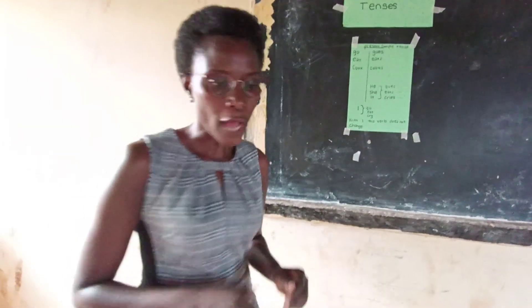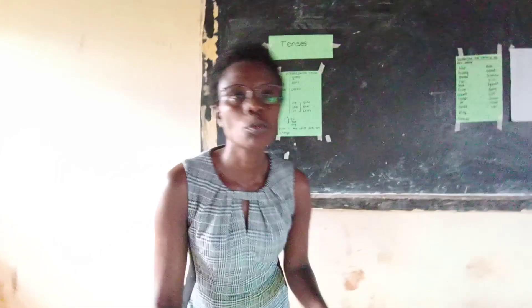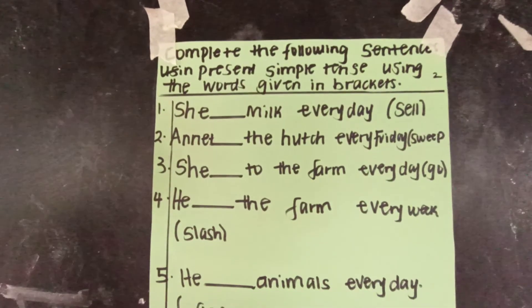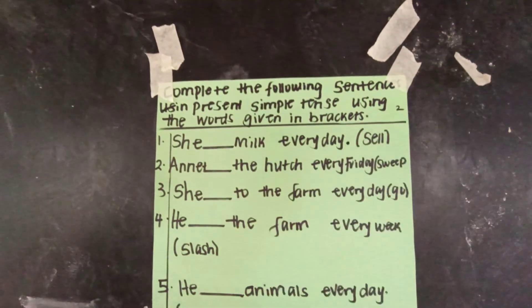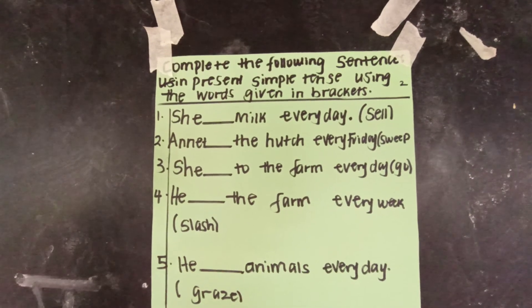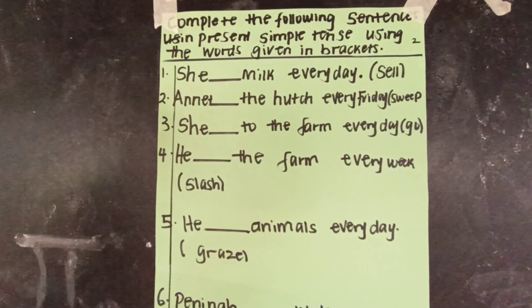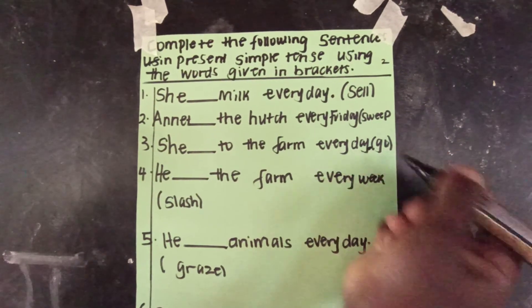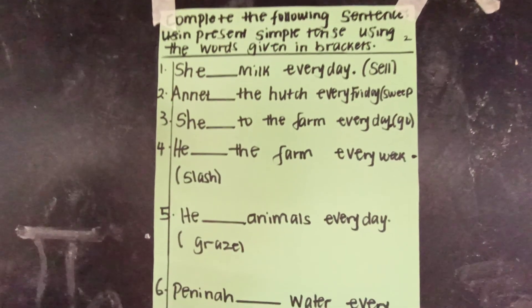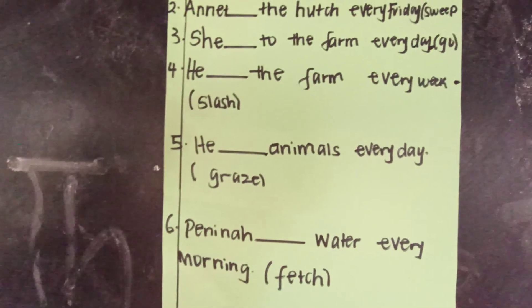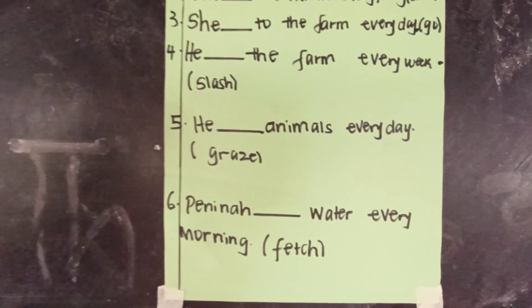So, we're going to do an exercise, and then we'll see what to do tomorrow. Read with me. Complete the following sentences in present simple tense using the words given in brackets. She ___ milk every day (sell). Annette ___ the house every Friday (sweep). She ___ to the farm every day (go). He ___ the farm every week (slash). He ___ animals every day (graze). Penina ___ water every morning (fetch). Okay? In your best handwriting, do that work.